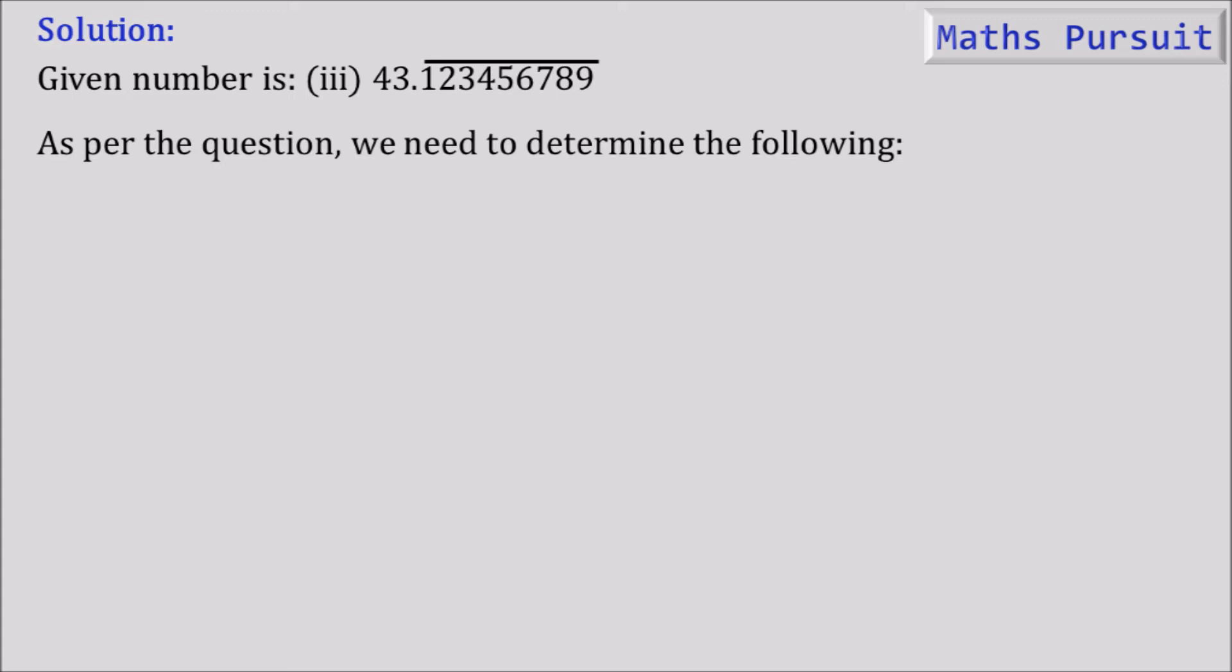Coming to the solution, the given number is 43.123456789 with a bar above that. So let us first analyze the question and see exactly what the question is asking, because there are several lines of question given. So it's better to first find out exactly what we are going to derive.